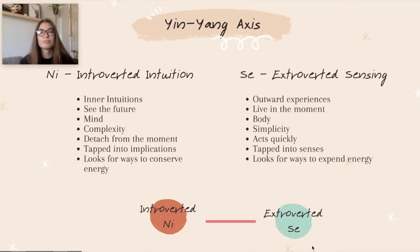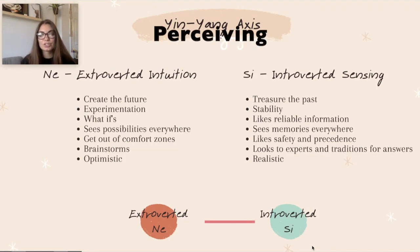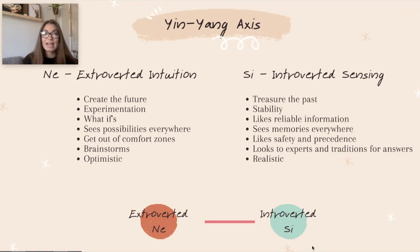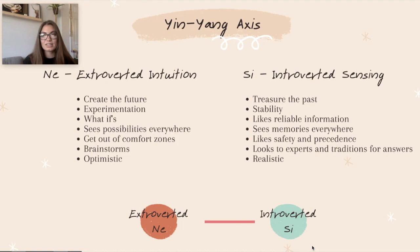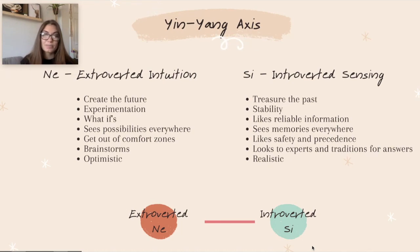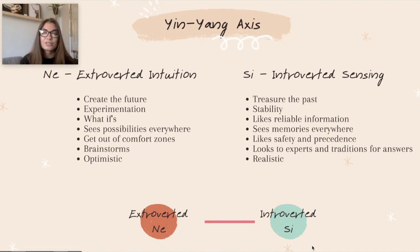The second information-gathering axis is NE (extroverted intuition) paired with SI (introverted sensing). NE is about possibilities and probabilities in the outer world; SI is about processing sensory experience inwardly. NE creates the future; SI treasures the past. NE is about experimentation; SI is about stability. NE sees possibilities everywhere; SI sees memories everywhere. NE gets out of comfort zones; SI looks for safety and precedents. NE brainstorms new information; SI looks to experts and tradition. NE is optimistic; SI is more realistic. If you have one, you have the other.